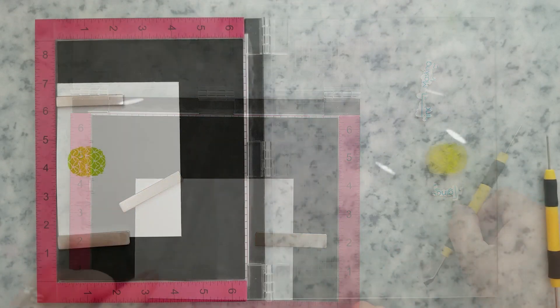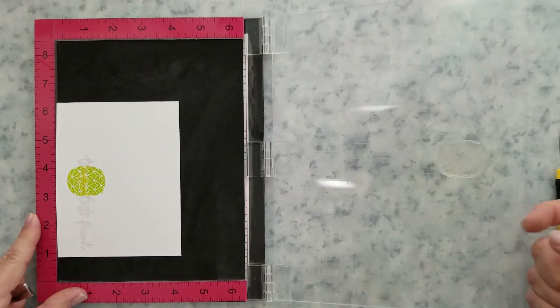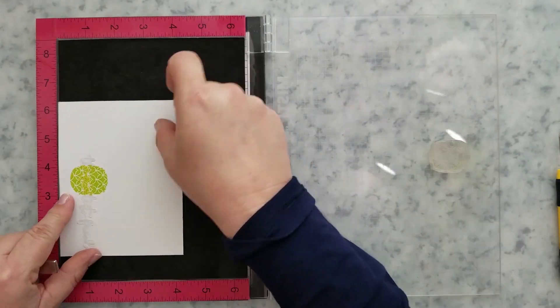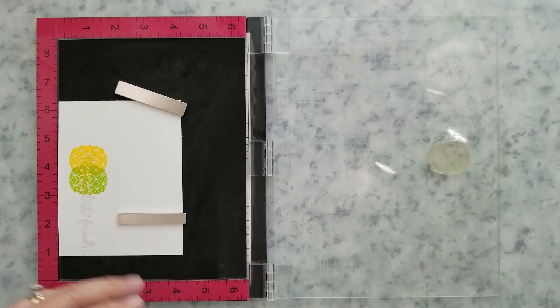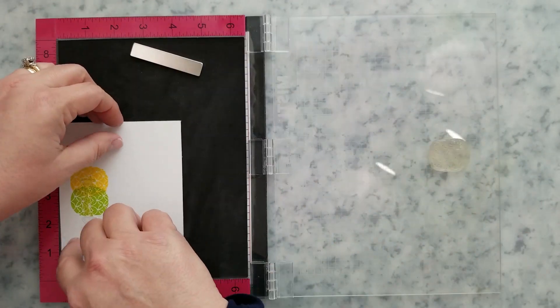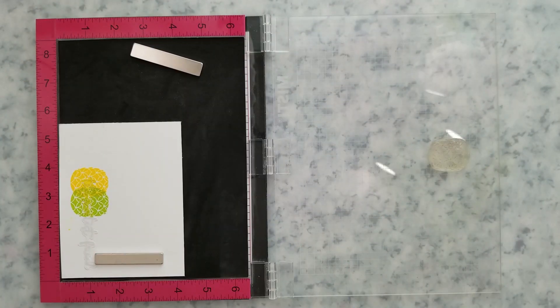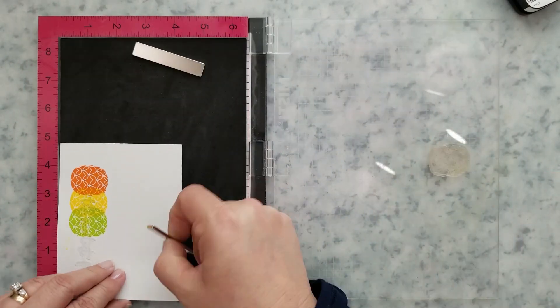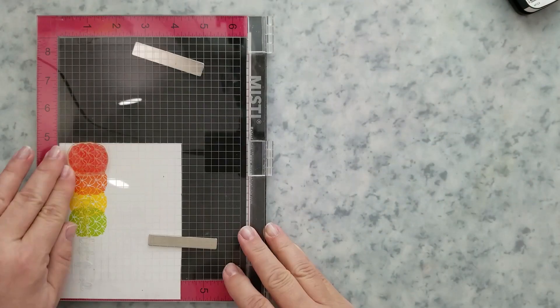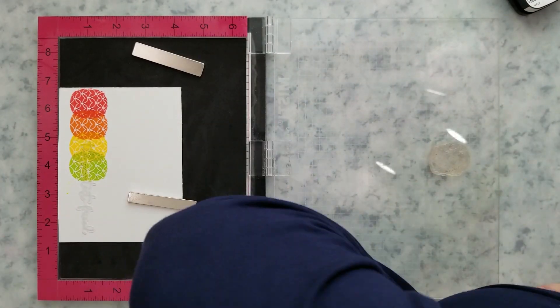Now this card is going to get a rainbow of pineapples, so I'm using the Verdant, Cheerful, Summertime, Blue, Bale, Purple Delight, Warm Breeze, and Tulip Red, obviously not in that order. I'm going to go ahead and stamp the pineapples across the panel, and I'm overlapping each one as I stamp them so that I can get all my colors across the panel.